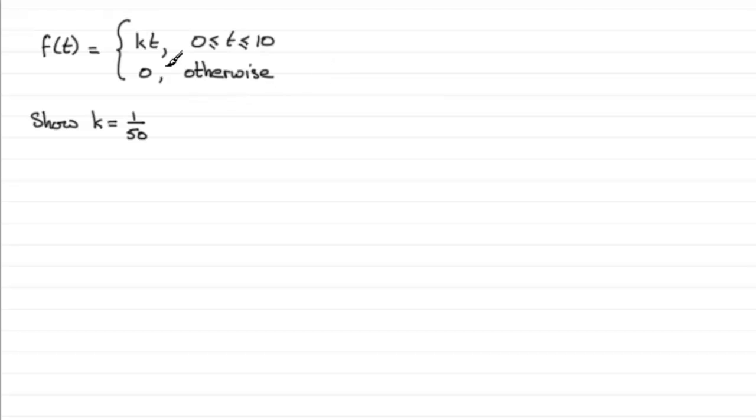And we've got to show that the constant k here is one-fiftieth. So there's several ways that we could do this, and the way that springs to mind first is that we've got such an easy function here. It's a linear function.